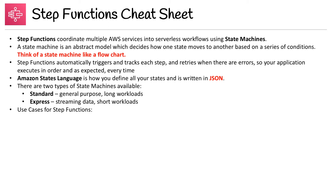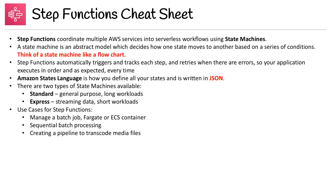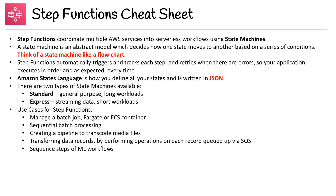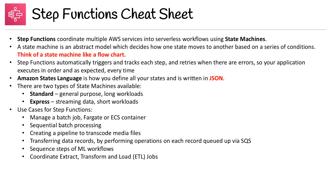Use cases for Step Functions include managing a batch job with Fargate or ECS containers, sequential batch processing, creating a pipeline to transcode media files, transferring data records by performing operations on each record queued up via SQS, sequencing steps for ML workloads, and coordinating extract, transform, and load (ETL) jobs. Check the AWS docs as they have many examples of use cases — you should really know them because you might see exam questions asking you to identify those kinds of situations.